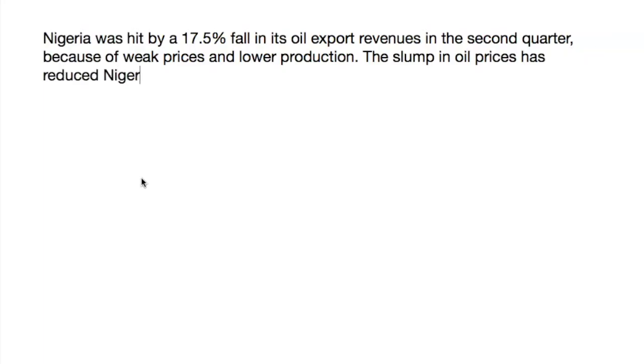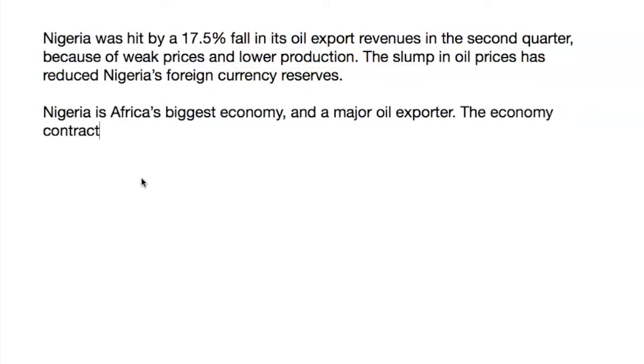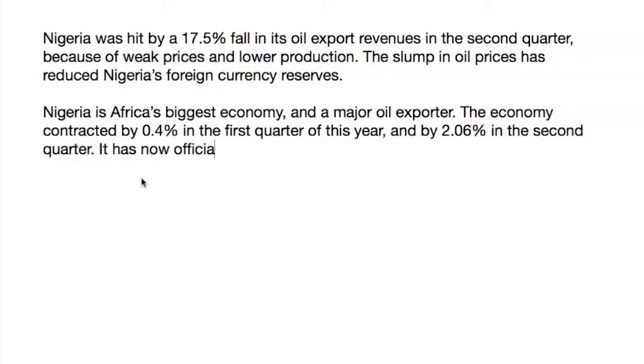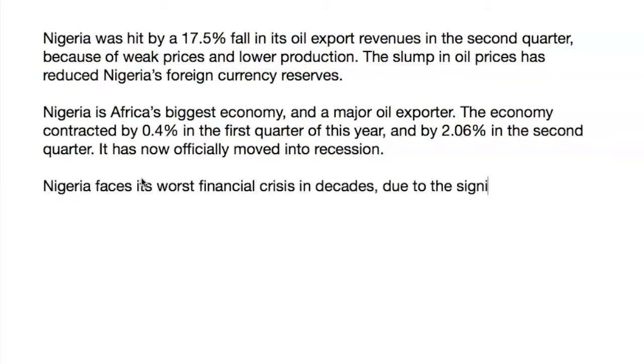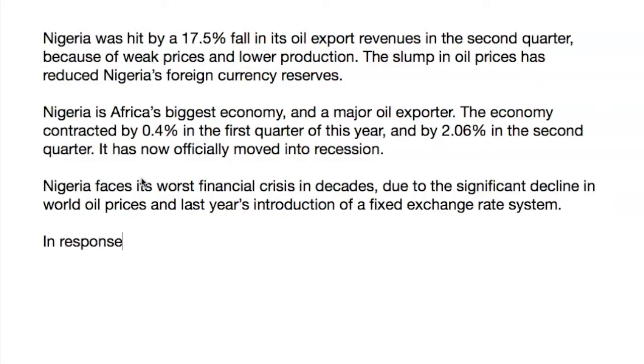Nigeria was hit by a 17.5% fall in its oil export revenues in the second quarter because of weak prices and lower production. The slump in oil prices has reduced Nigeria's foreign currency reserves. Nigeria is Africa's biggest economy and a major oil exporter. The economy contracted by 0.4% in the first quarter of this year and by 2.06% in the second quarter, it has now officially moved into recession. Nigeria faces its worst financial crisis in decades due to the significant decline in world oil prices and last year's introduction of a fixed exchange rate system.